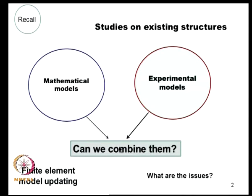In experimental studies none of these issues are primarily compromised - the constitutive laws, joint behavior, boundary conditions, and presence of nonlinearity are all captured without compromise. But imperfections associated with experimental work are linked to the process of measurement: calibration errors associated with sensors, sensor-structure interaction, actuator-structure interaction, problems with data acquisition such as aliasing, and so on. Both models are therefore imperfect, and we need to allow for these things when reconciling predictions from the two models.